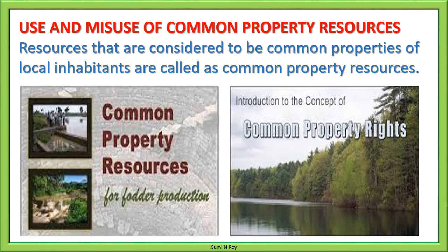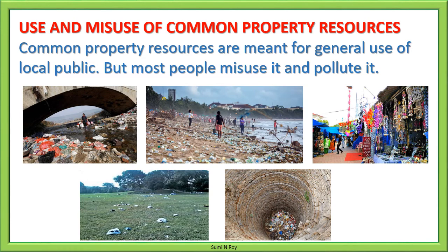Resources that are considered common properties of local inhabitants are called common property resources. They are meant for general use of local public and no single person can claim ownership over them. This is why these resources are frequently misused by irresponsible people. Common resources like rivers and lakes are water bodies meant for all human beings and other organisms, so everyone has the right to make judicious use of them. However, many industries and local bodies illegally pour dirty water into rivers and lakes, and such entities are punished sooner or later.